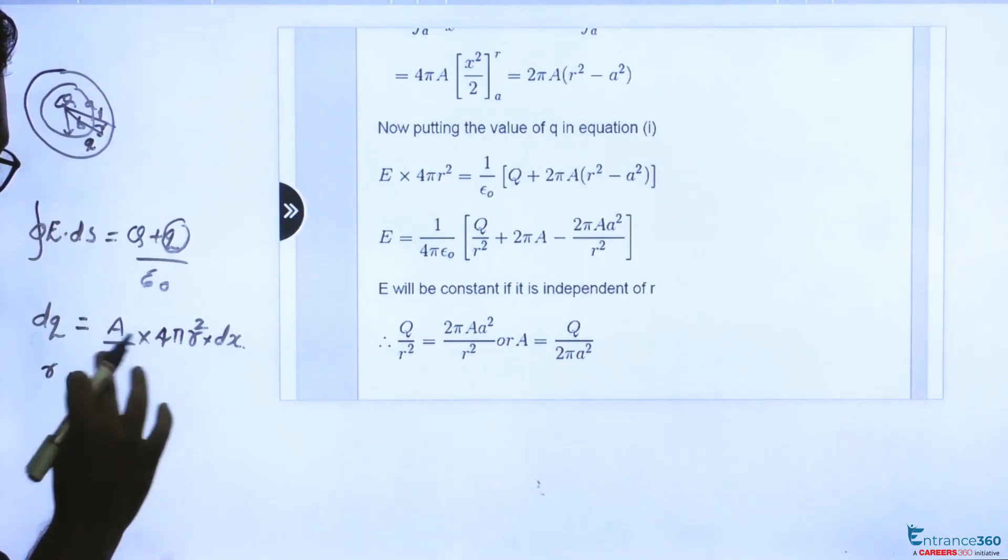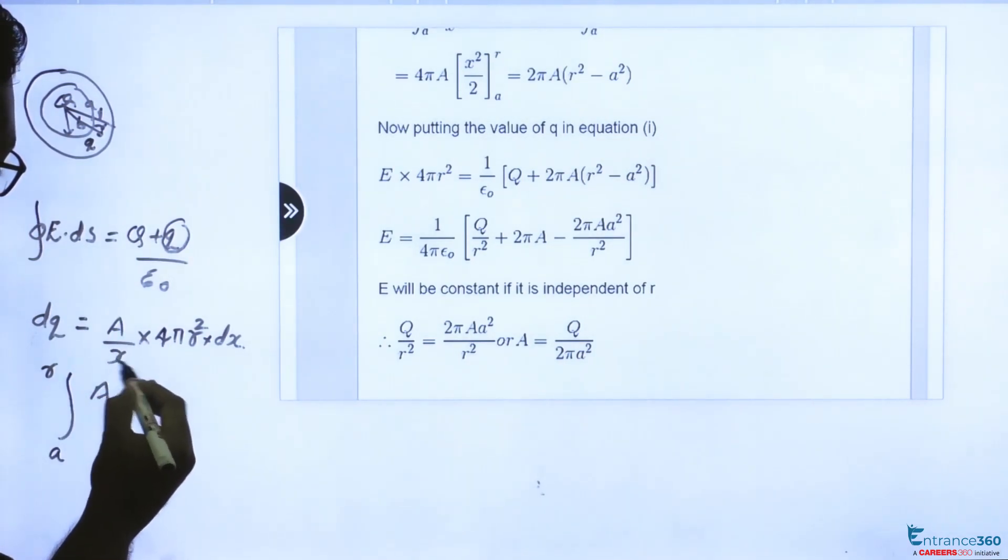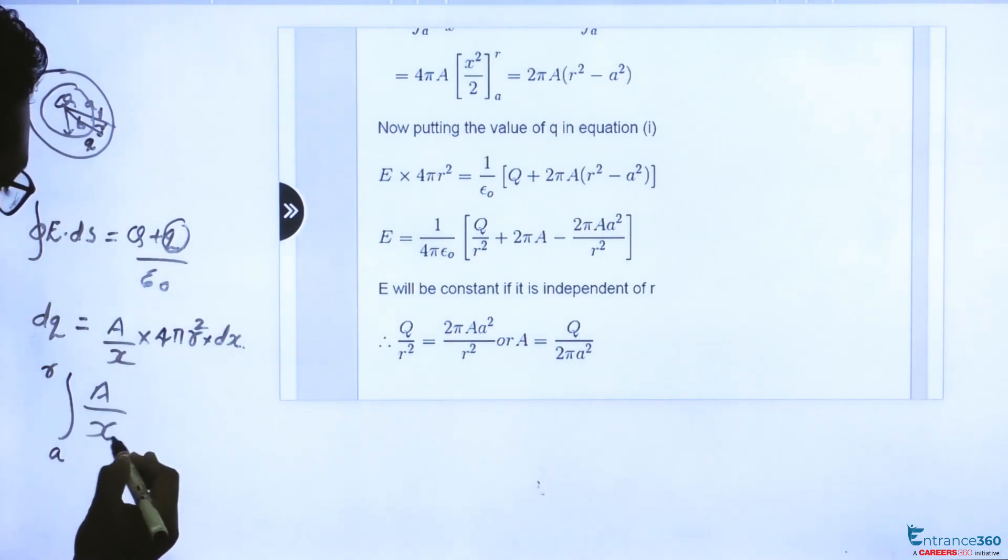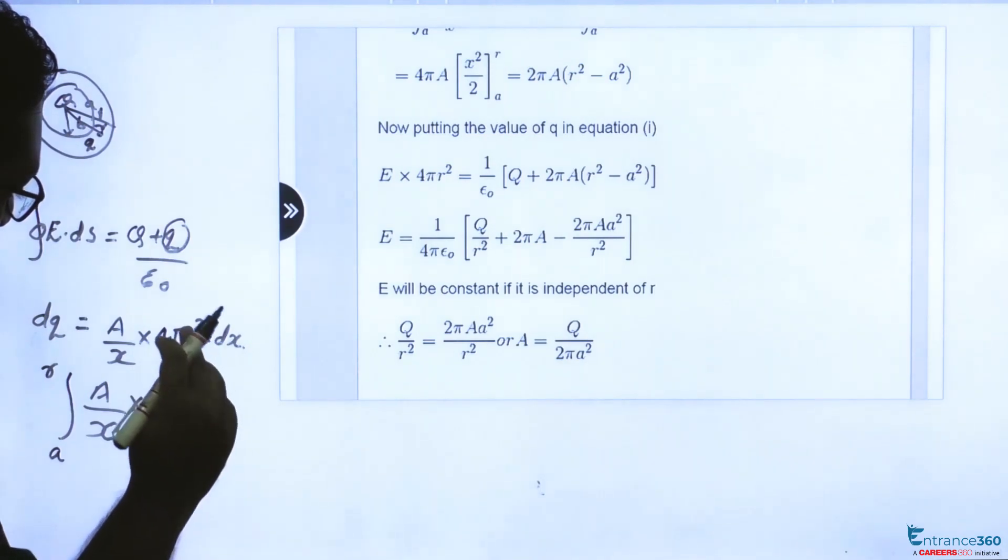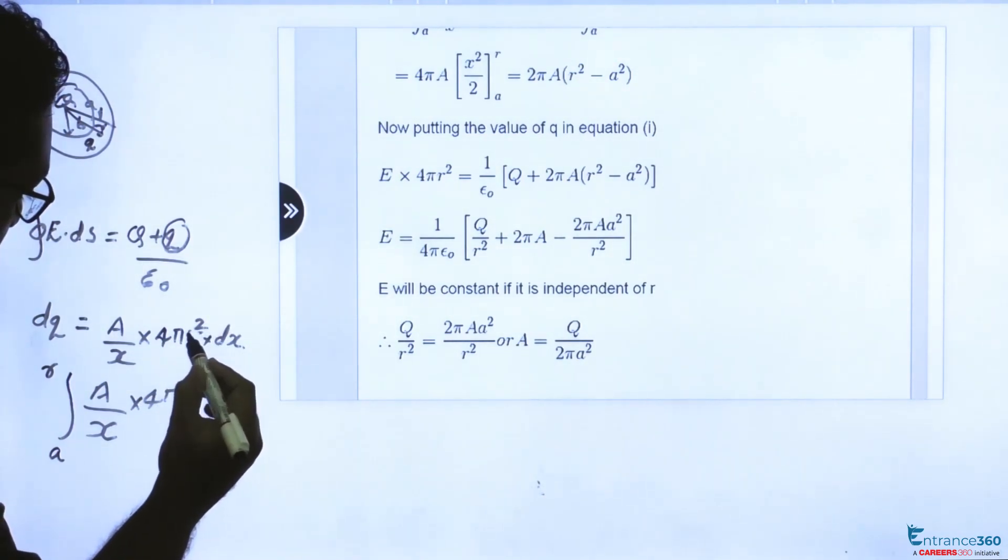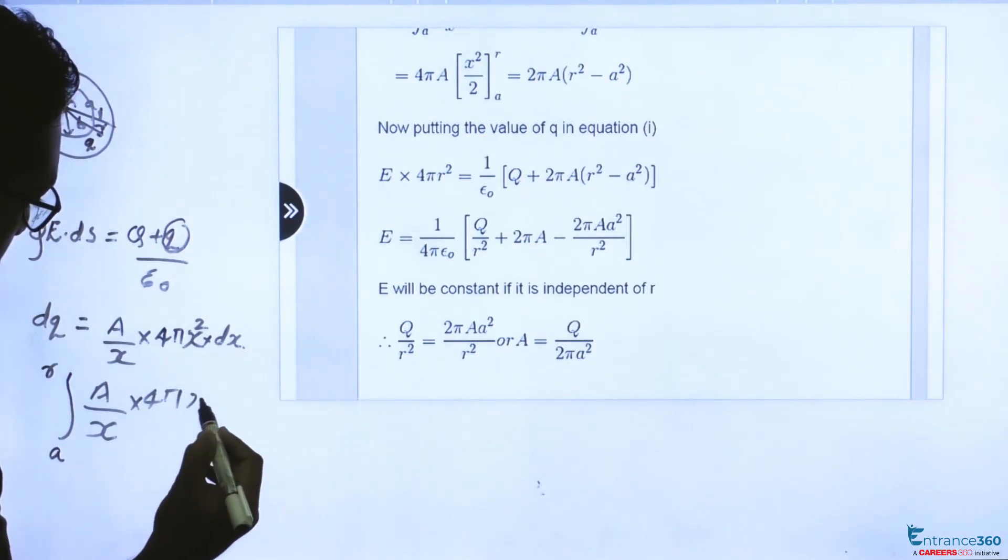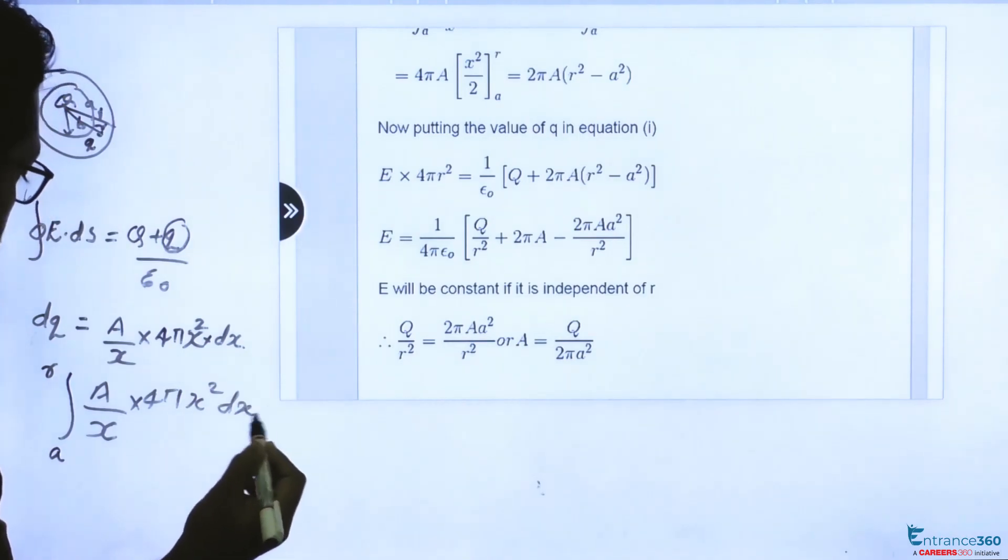It's given as A by X. Here we are considering the x distance, A by X, 4 pi, we are considering for x, x square, dx.